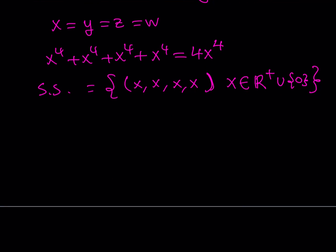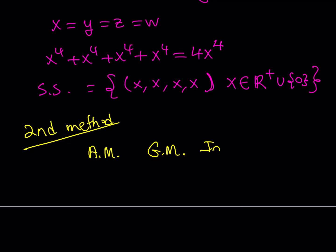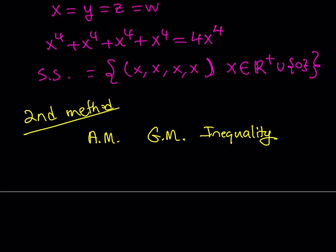Now let's talk about the second method, which is different from the first because it uses inequalities. We use something called the AM-GM inequality. For positive or non-negative real numbers, the arithmetic mean is always greater than or equal to the geometric mean. Equality holds when all the terms are equal.